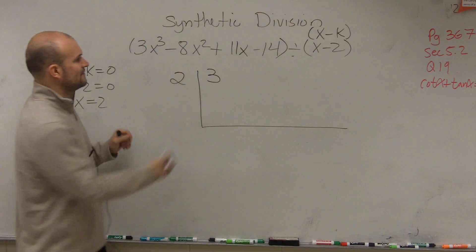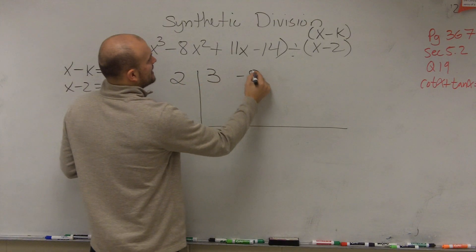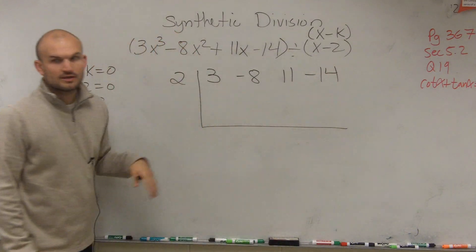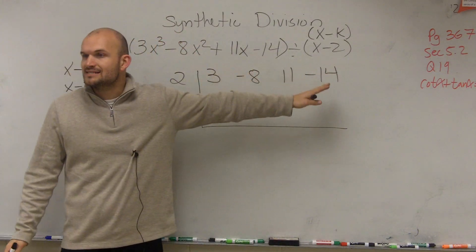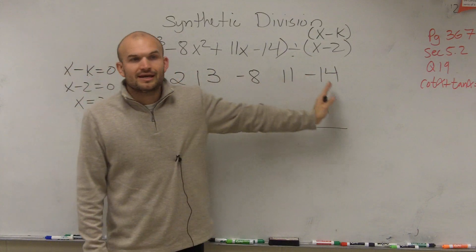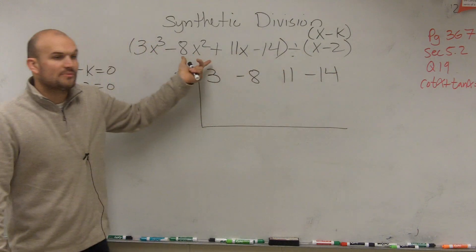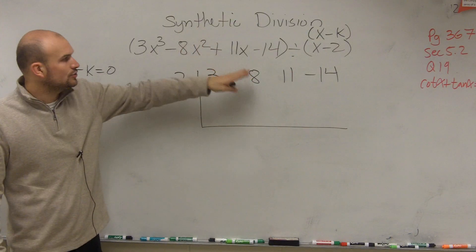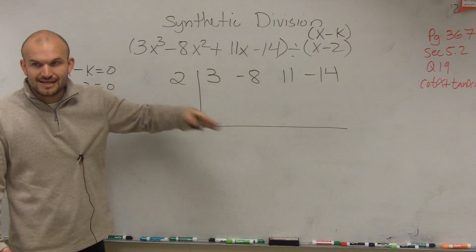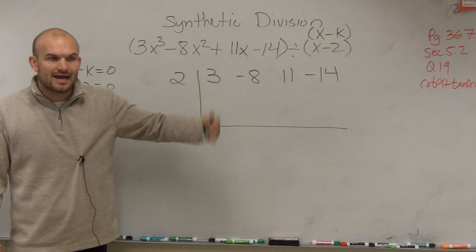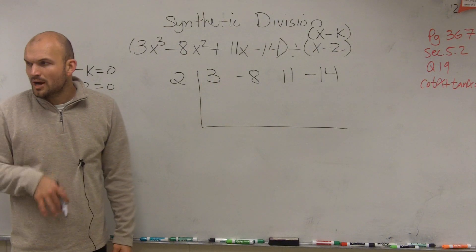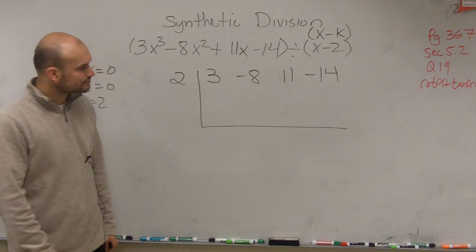So you do 3, negative 8, 11, and negative 14. You take all the coefficients and the constant, and list them in descending order from the polynomial. If you did not have a term, you would put a 0 in there. You have to make sure you include every single degree in descending order. We'll do a problem where we're missing one.